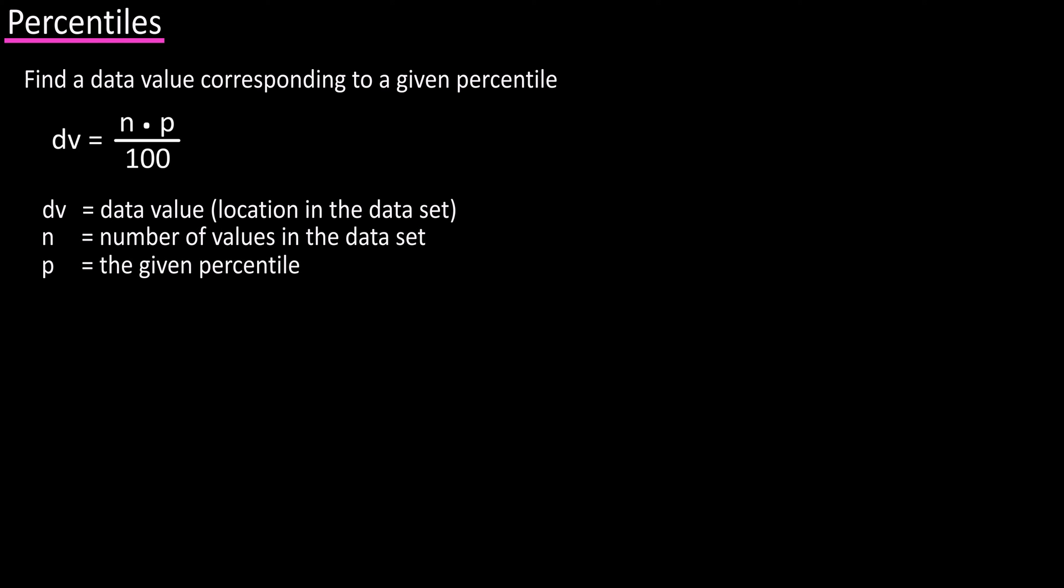Now, let's look at finding a data value corresponding to a given percentile. The formula for this is dv equals n times p divided by 100. In this formula, dv stands for data value, or the location in the data set, n equals the number of values in the data set, and p equals the given percentile.